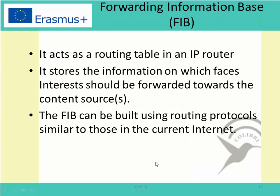The third component of the CCN node is the forwarding information base, the so-called FIB table, which is similar to the routing table in an IP router. It stores the information on which faces the interest should be forwarded towards the content source. The FIB can be built using routing protocols similar to those in the current internet.